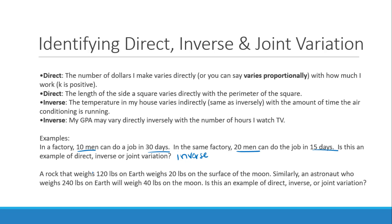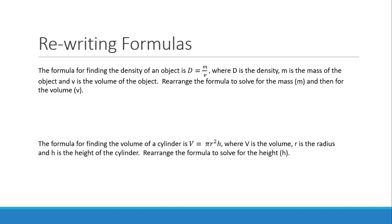A rock that weighs 120 pounds weighs 20 pounds on the surface of the moon. Similarly, an astronaut weighs 240 pounds on Earth will weigh 40 pounds on the moon. Is this an example of direct, inverse, or joint? Now, it's not joint because all we're dealing with is Earth and moon here. There's not another variable. Now, the Earth weight went up. What happened to the moon weight? It also went up. So since up and up, up and up, this is an example of direct variation.